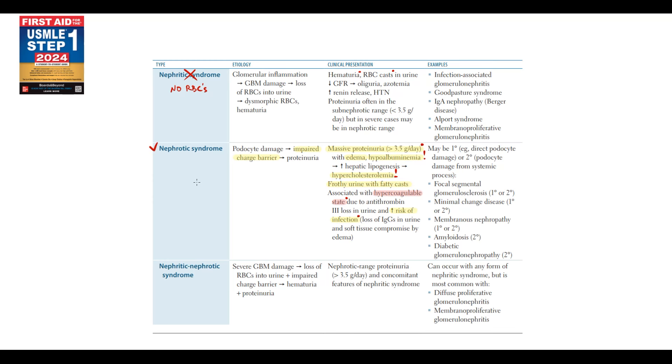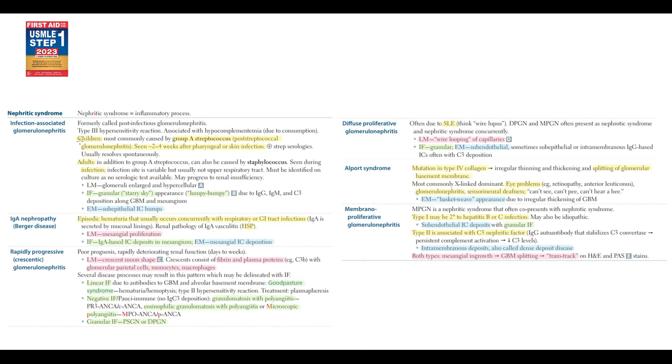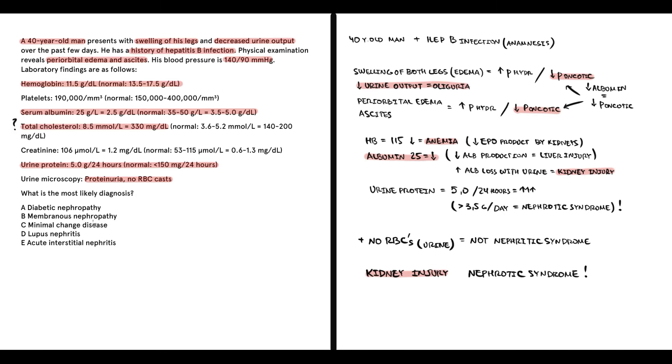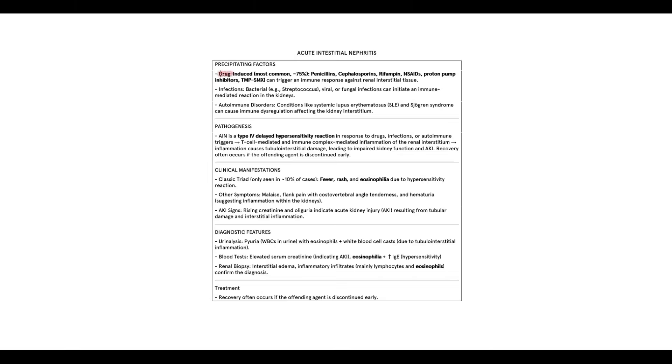So now, knowing this, we can rule out all subtypes of glomerulonephritis which are characterized by nephritic syndrome. And it's a huge group. So in this case it's not lupus nephritis simply because there is no nephritic syndrome and no lupus. Acute interstitial nephritis is also highly unlikely.